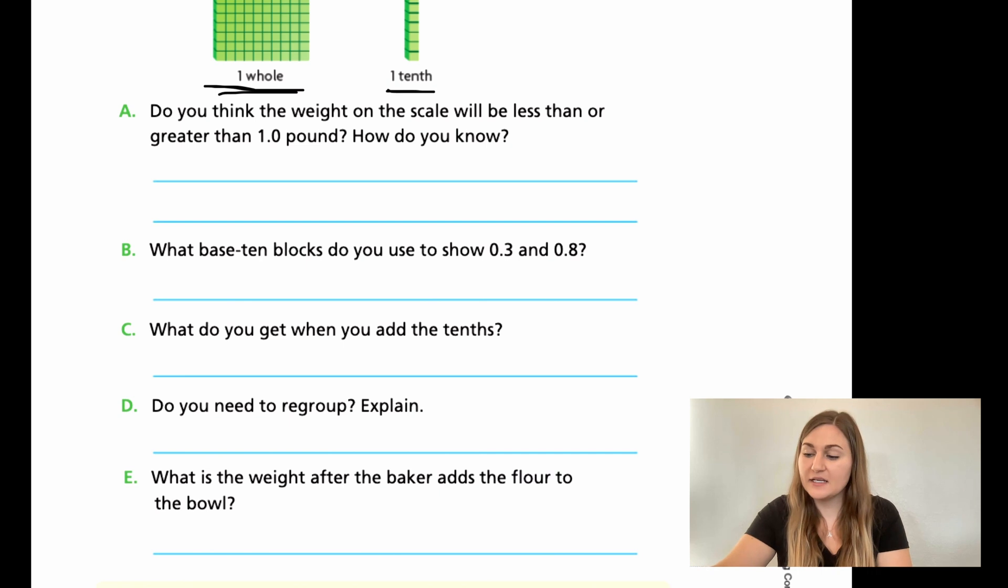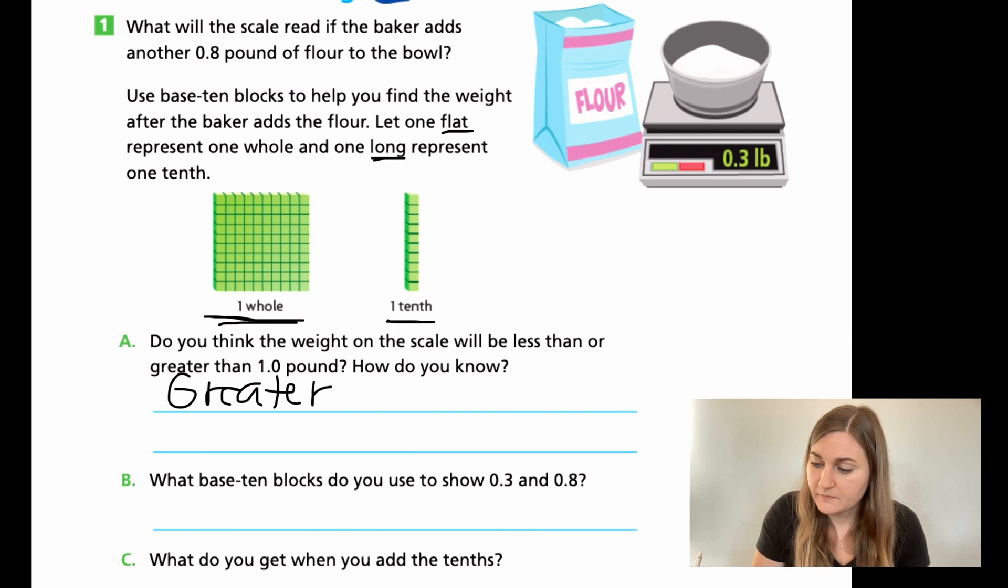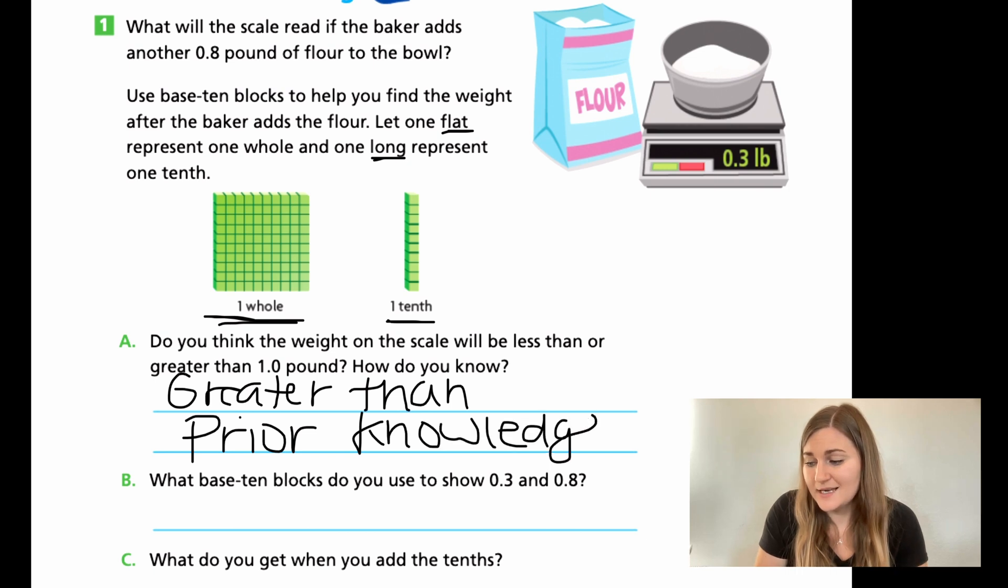All right, great job. Let's go ahead and go over this. So for A, do you think the weight on the scale will be more or less? Well, I know that if I'm adding eight to a three, that's 11. And I know that 11, even if I was just adding eight and three needs to be regrouped. It's probably going to be more than one. It's going to bump me into the next place value. So I am going to put greater than. And how do I know? I'm just going to say prior knowledge. That's my excuse because I know eight plus three is 11 and that needs to regroup. It's going to go past into the next place value, which is one.